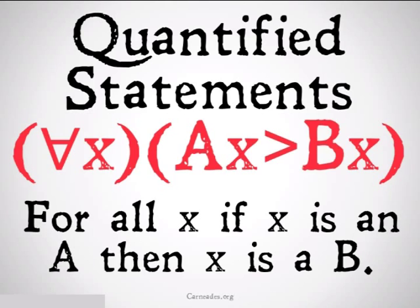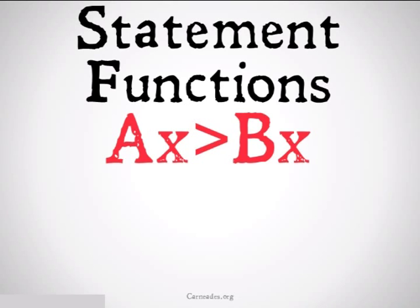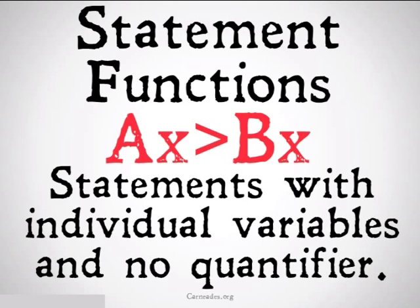That's going to be a quantified statement where you have the variable next to the capital letter in some form. It doesn't have to have an operation, but it can, and a quantifier such as for all x or there exists an x out front. We also have statement functions. Statement functions are the smaller part of a quantified statement, basically a quantified statement without that quantifier. They are statements with individual variables and no quantifier. Statement functions don't really have a meaning without a quantifier binding them. They have free variables because those variables aren't bound by a quantifier.